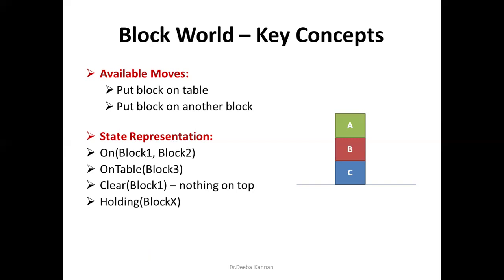The state representation is a snapshot. This is the representation of a single block — this is the final representation. You can see: on-table(C) is true, on(B, C) is true, on(A, B) is true, clear(A) is true. This is all connected — this is one state.